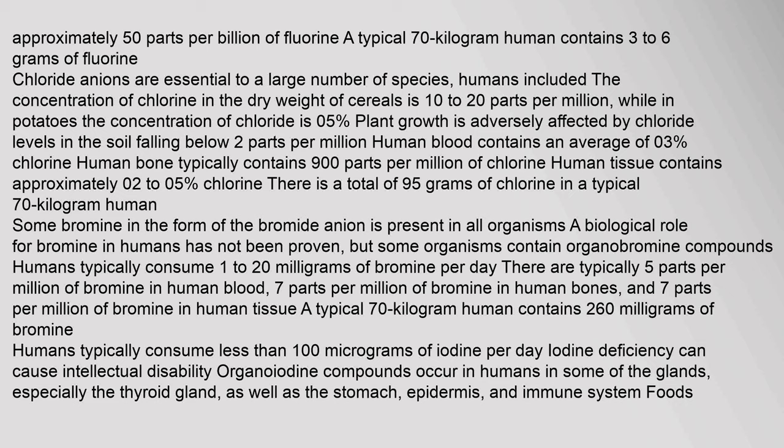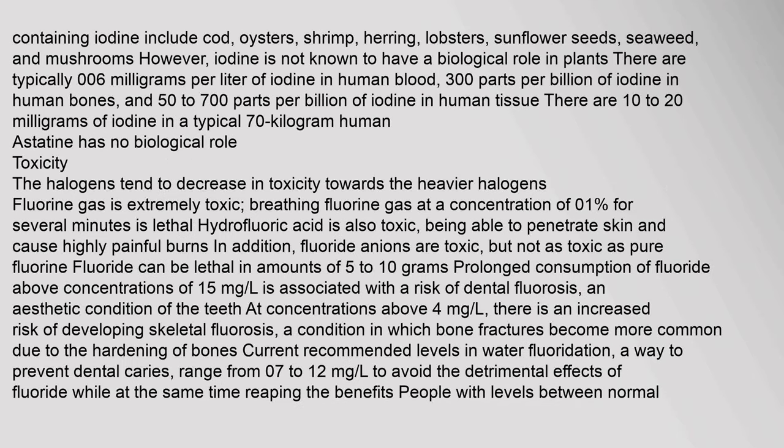Some bromine in the form of the bromide anion is present in all organisms. A biological role for bromine in humans has not been proven, but some organisms contain organobromine compounds. Humans typically consume 1–20 mg of bromine per day. There are typically 5 parts per million of bromine in human blood, 7 parts per million in human bones, and 7 parts per million in human tissue. A typical 70 kg human contains 260 mg of bromine. Humans typically consume less than 100 µg of iodine per day. Iodine deficiency can cause intellectual disability. Organoiodine compounds occur in humans in some glands, especially the thyroid gland, as well as the stomach, epidermis, and immune system. Foods containing iodine include cod, oysters, shrimp, herring, lobsters, sunflower seeds, seaweed, and mushrooms. However, iodine is not known to have a biological role in plants.